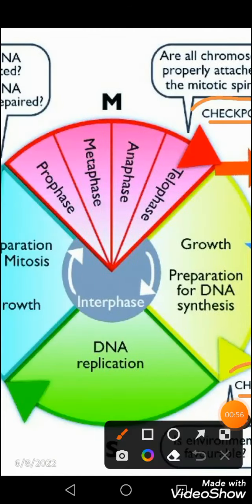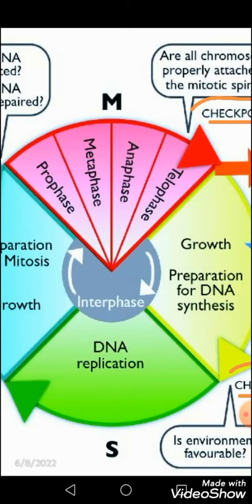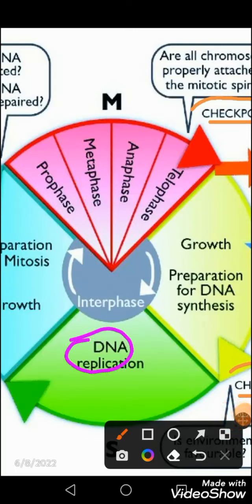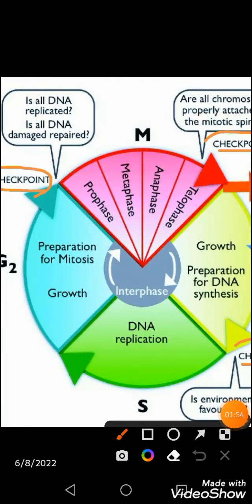The second phase of interphase is the S phase, or synthesis phase. This phase is meant for DNA replication, as shown in the picture in green. DNA polymerases, which are enzymes, are produced here. The cell prepares an extra copy of DNA so it can be transmitted into the daughter cell during mitosis.